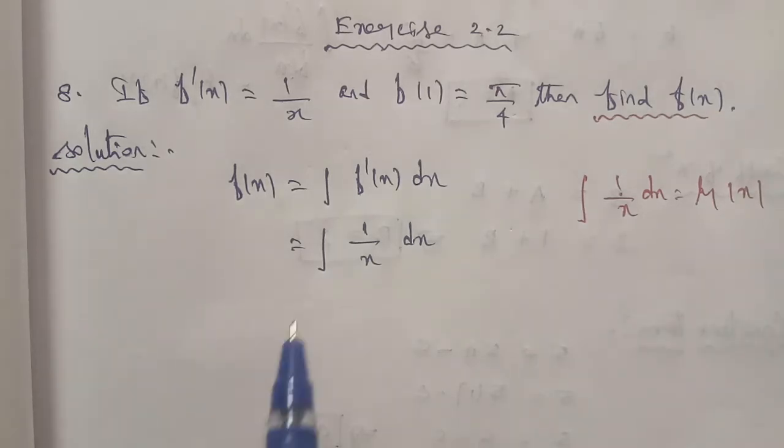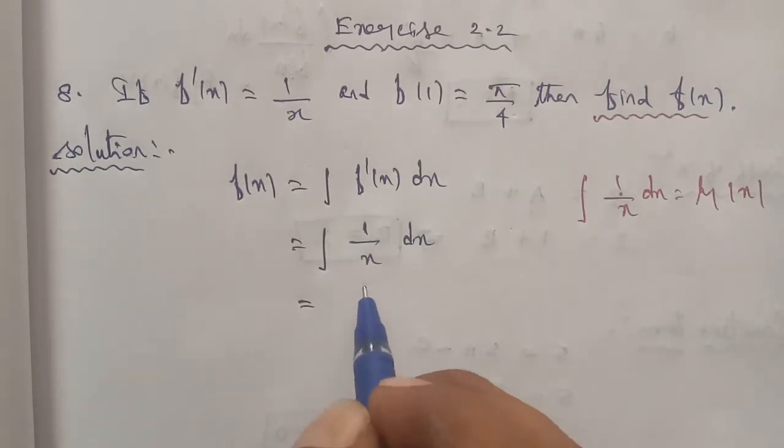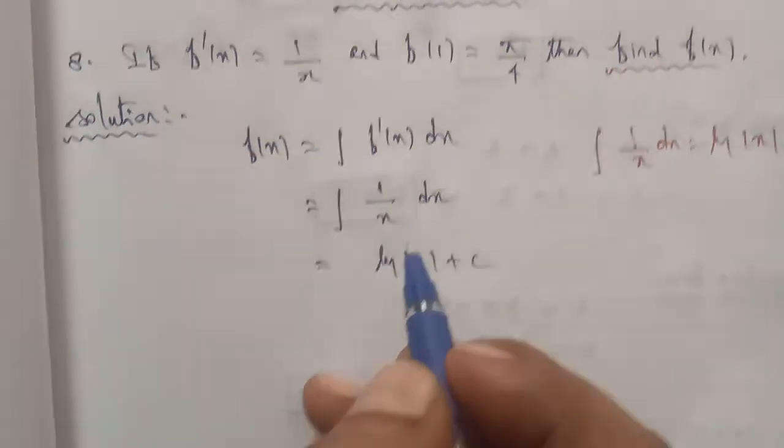So using the formula, we get f(x) equals log mod x plus c.